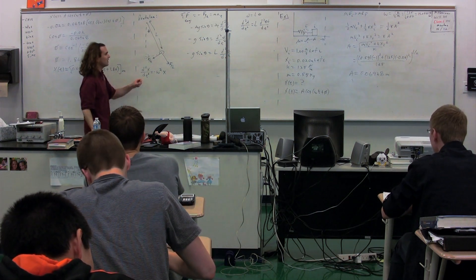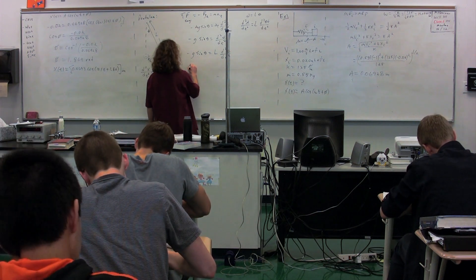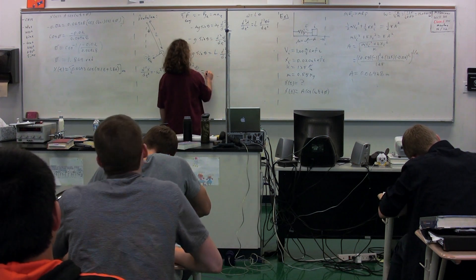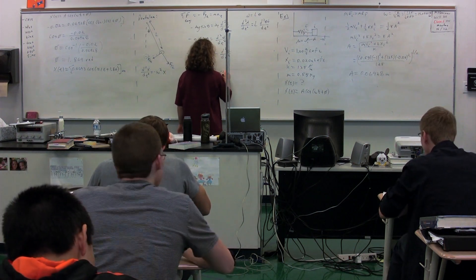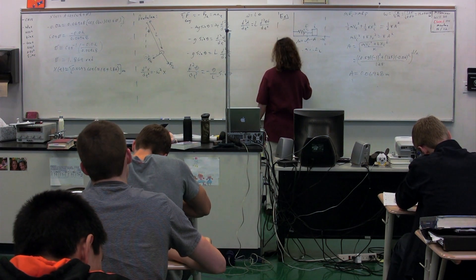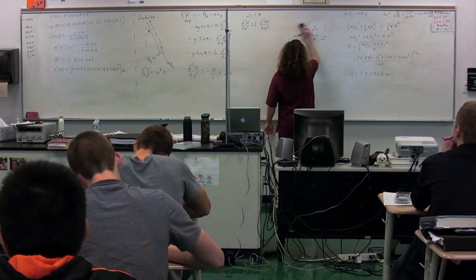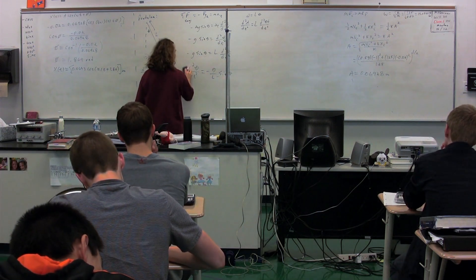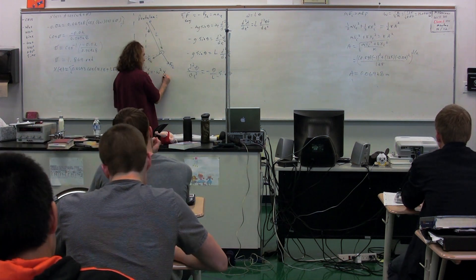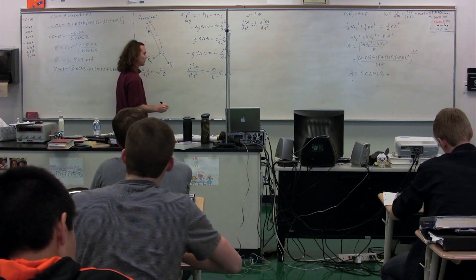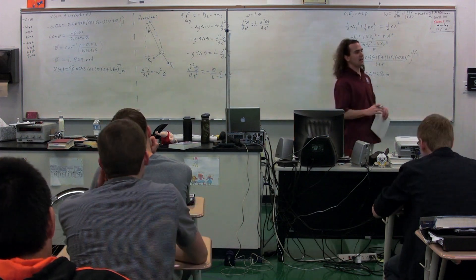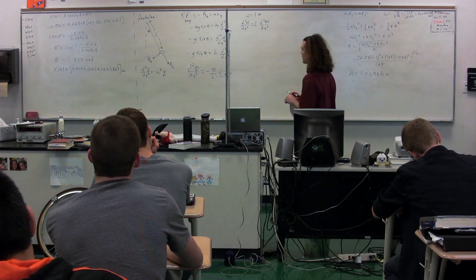Rearranging this, because we want to get into something that looks like this, we're going to get the second derivative of angular position as a function of time is equal to, what are we going to get, negative G over L times the sine of theta. So, the problem is, is that over here we have X and X. Over here we have theta and sine theta. We should have theta on the right. We do not. We only have sine, we have sine theta instead of only theta.